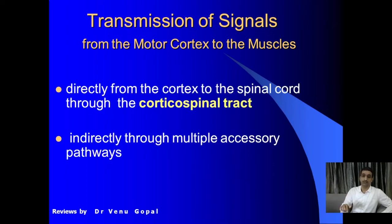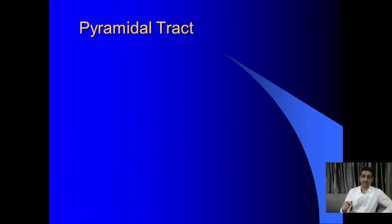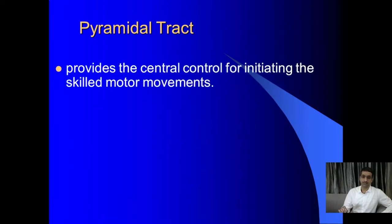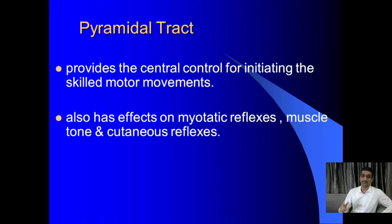The topic of discussion is the corticospinal tract, which is the direct, non-stop pathway from the brain to the spinal cord. It provides central control of initiating any movement — finger movement, hand movement, or any muscle movement in the body. It is also important for maintaining tone, myotatic reflexes, and cutaneous reflexes.